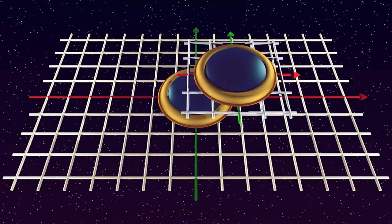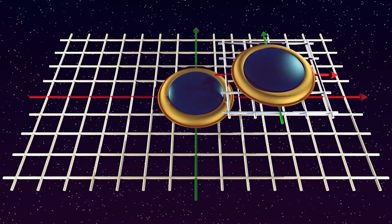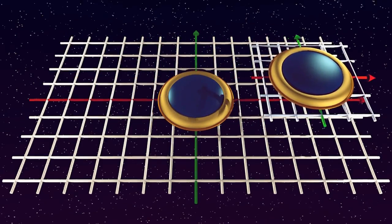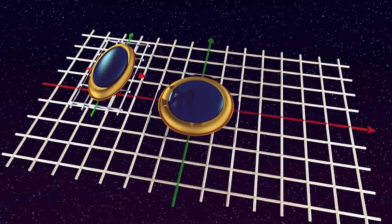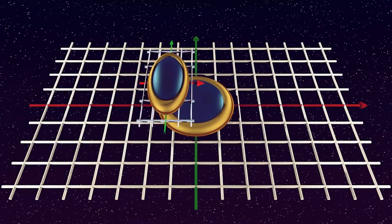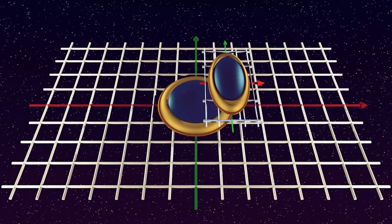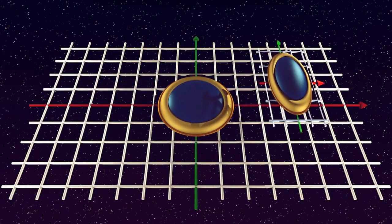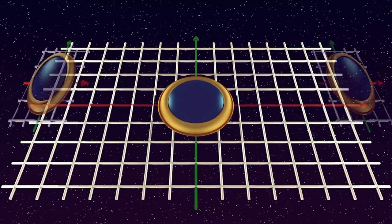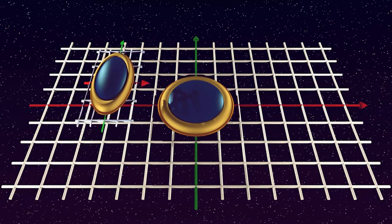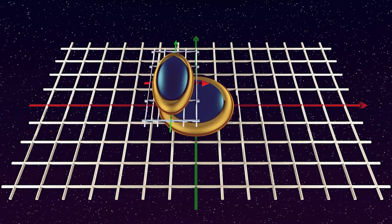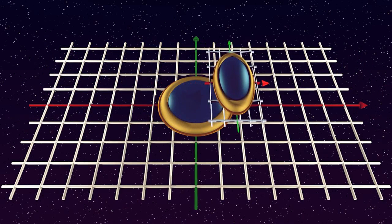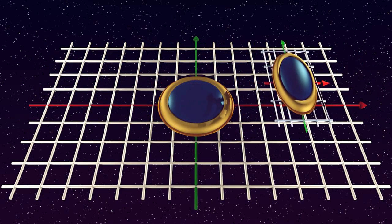But when the moving lab cruises at a significant fraction of the speed of light, we will see instead something like this: the moving lab appears to shrink along the direction of motion due to relativistic length contraction.